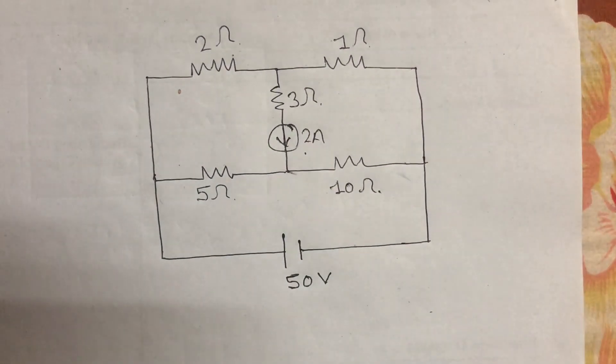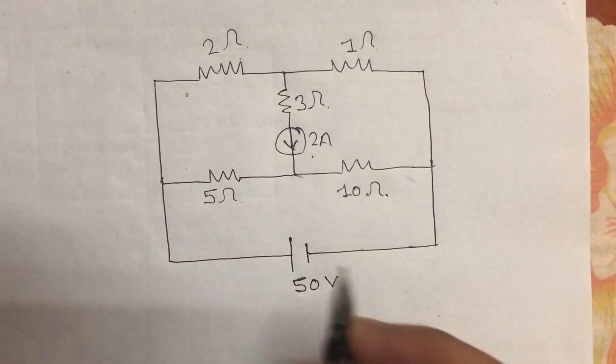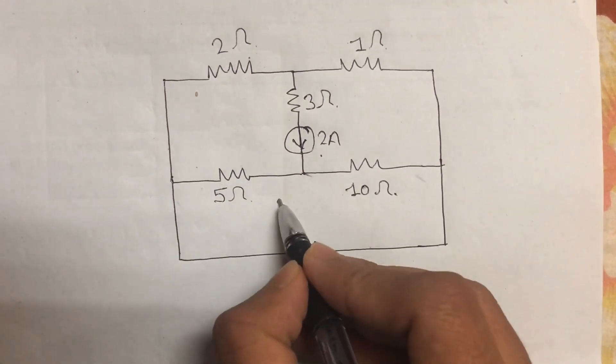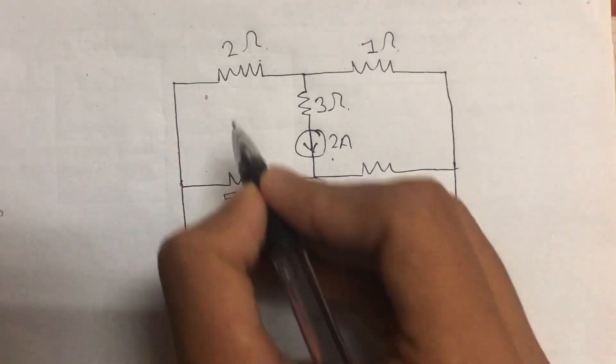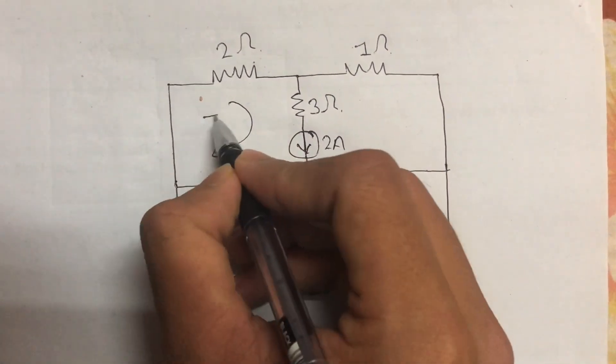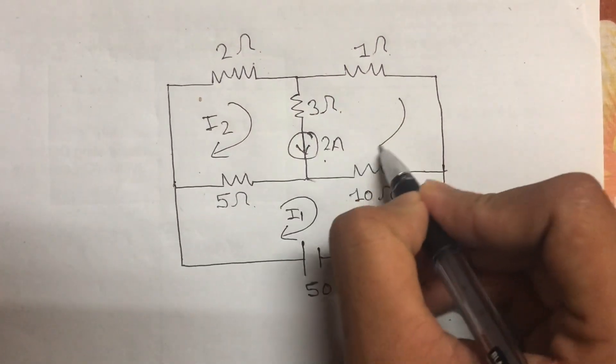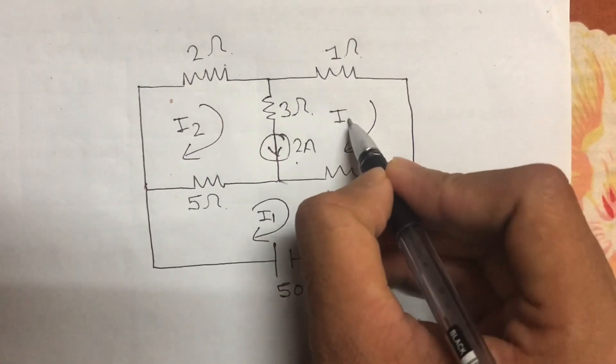Super mesh condition is this: first of all, in this loop, loop 1, I1 current is flowing, and in loop 2, I2 current is flowing, and in loop 3, I3 current is flowing.